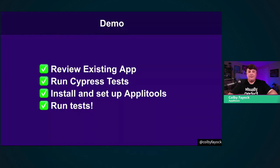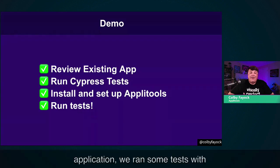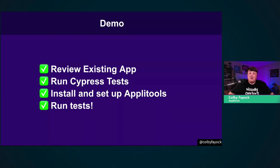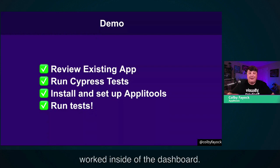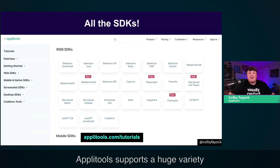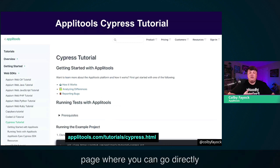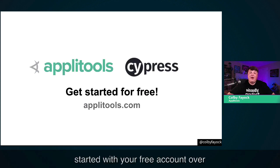Let's go back to the slides for a quick recap of what we achieved. After reviewing our existing application, we ran tests with Cypress and saw how it automates browser tasks. We then used Applitools with the Eyes Cypress SDK to run visual tests, taking our existing strong Cypress tests to another level. We saw exactly how it worked inside the dashboard. Applitools supports a huge variety of SDKs — you can find one for pretty much any testing framework you already use. You can find the Cypress-specific tutorial at applitools.com/tutorials/cypress.html, and get started with your free account at applitools.com.